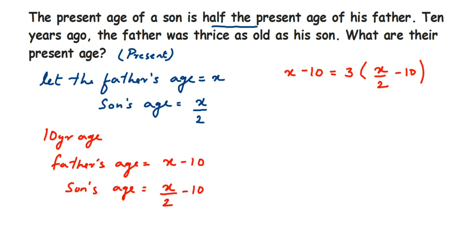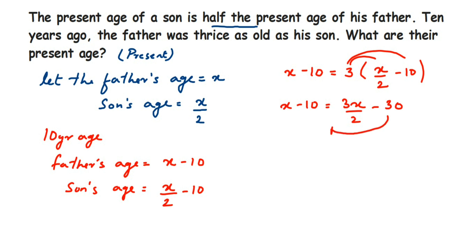Now we solve: x − 10 = 3(x/2 − 10). Opening the bracket: x − 10 = 3x/2 − 30. Bring all variables to one side and constants to the other — transpose −30 to the left and x to the right: −10 + 30 = 3x/2 − x, which gives 20 = 3x/2 − x.